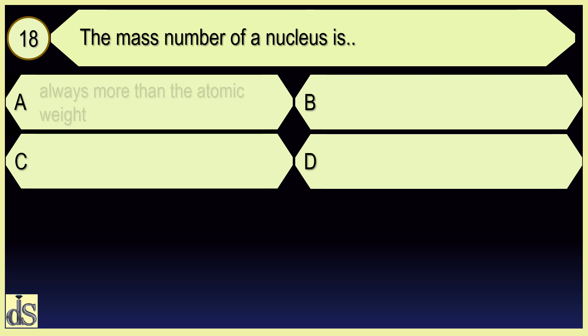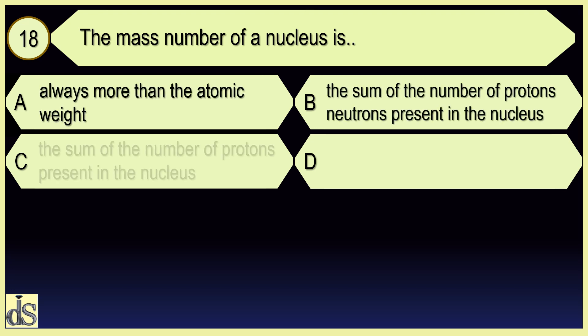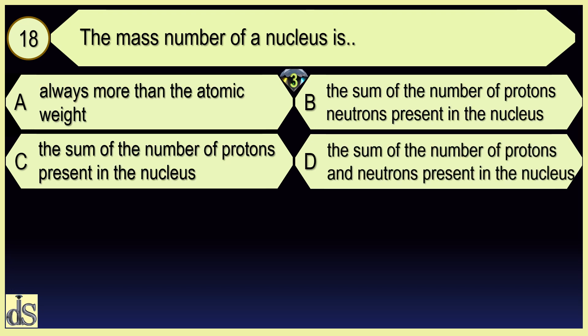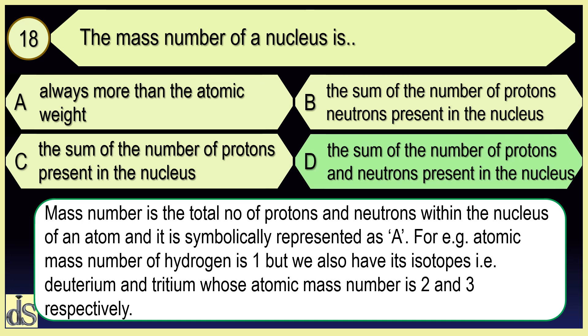The mass number of a nucleus is? The sum of the number of protons and neutrons present in the nucleus.